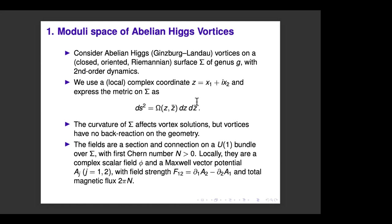I start with the abelian Higgs model on a general closed oriented Riemann surface Σ of genus g, with a Riemannian metric and second-order dynamics. It's convenient to use a local complex coordinate z on Σ — this is the base space where the vortices live — and I express the metric in conformal form with a conformal factor Ω times dz dz̄ locally.